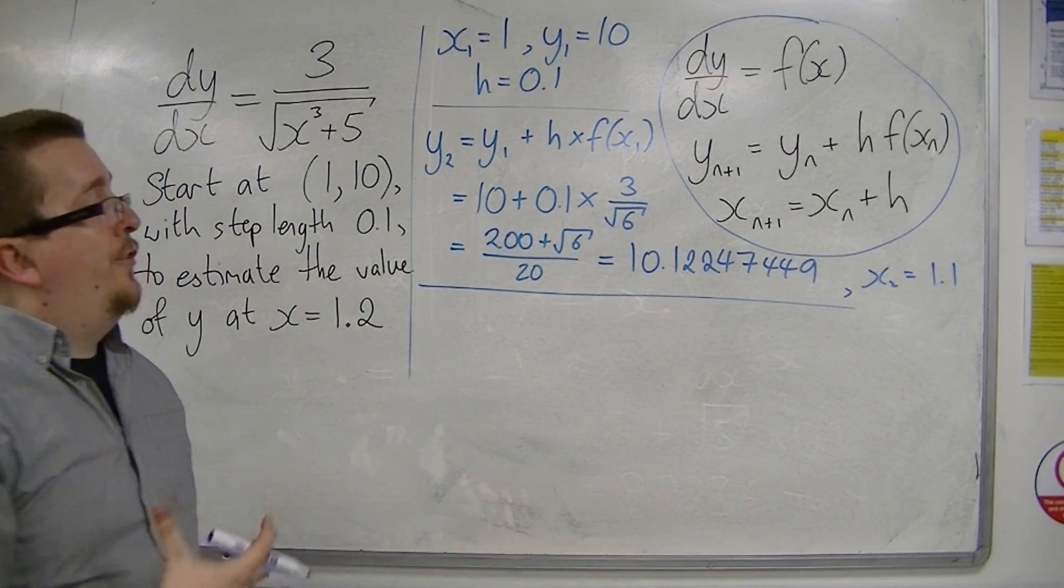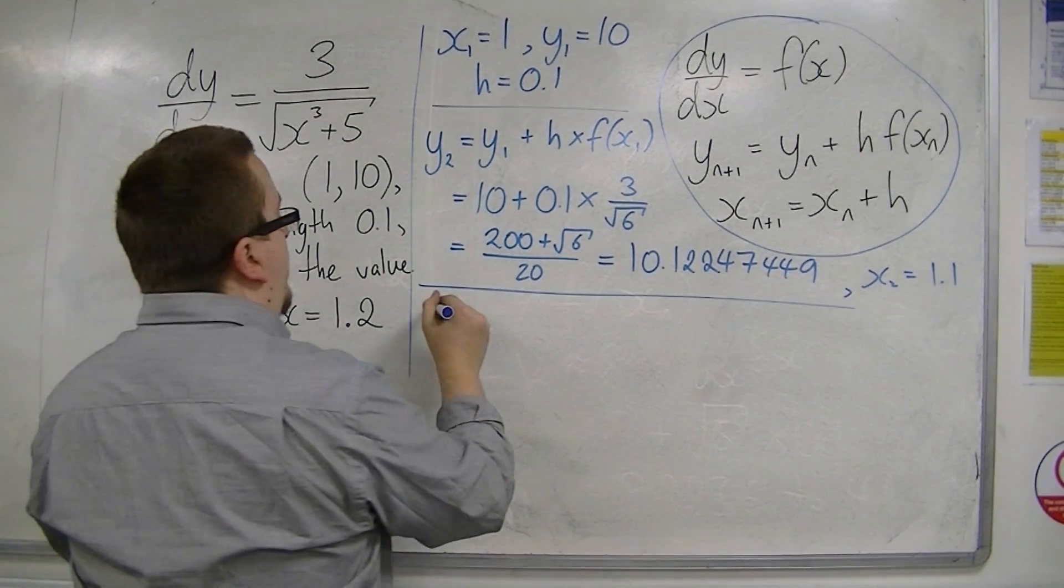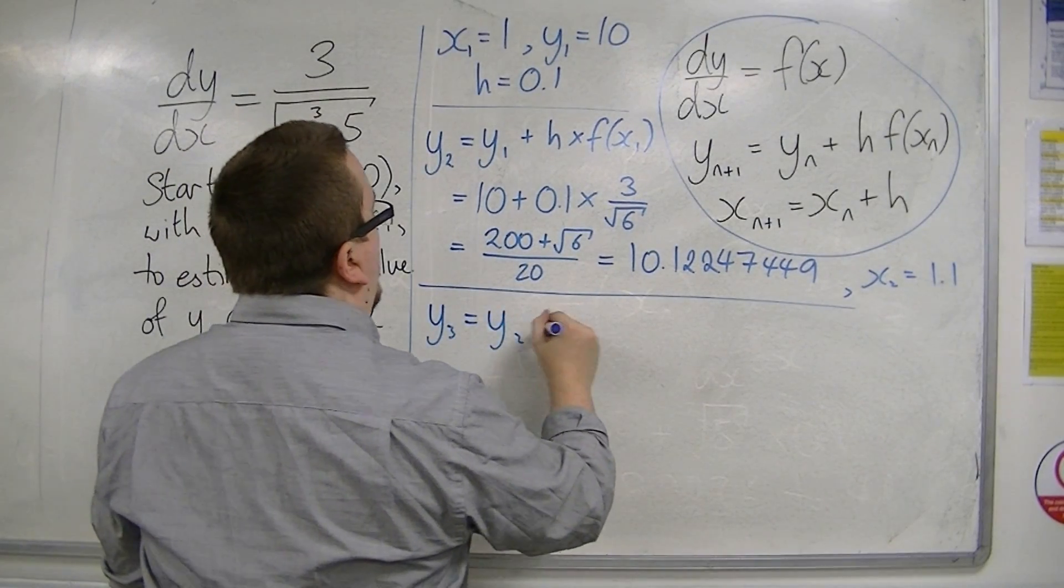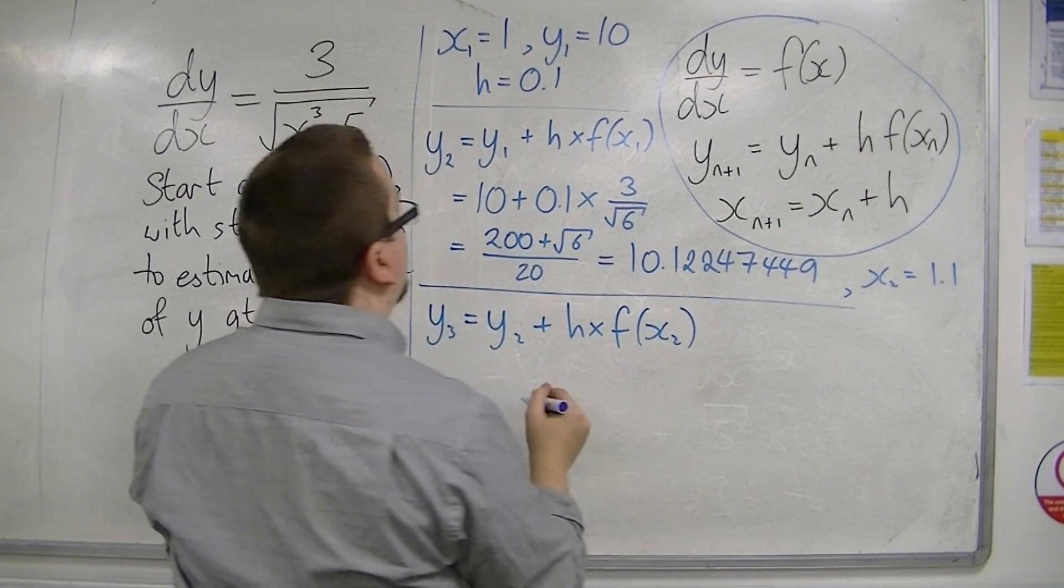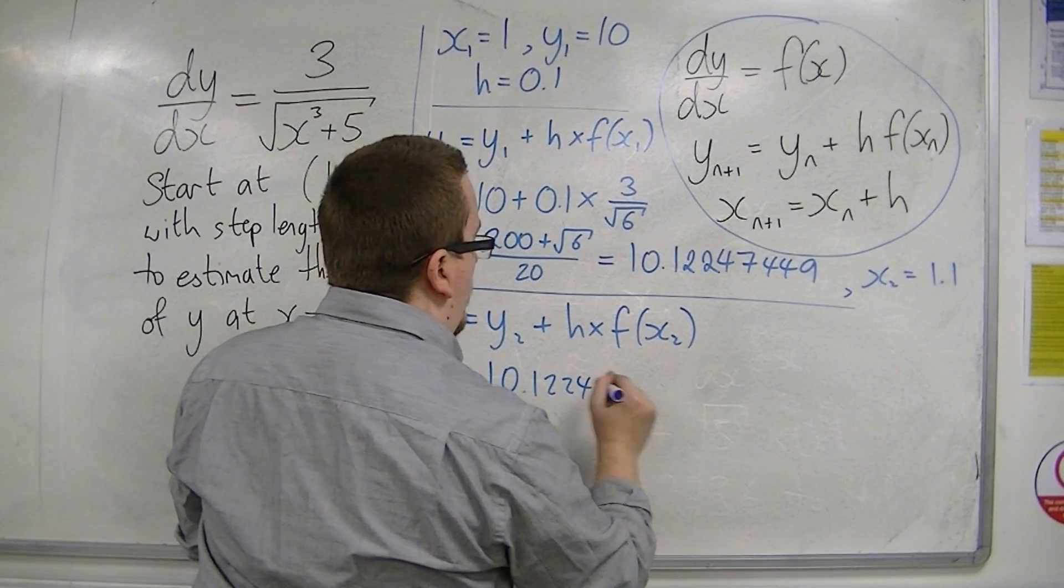So now we want to find the y-coordinate that goes with 1.2. So we're going to have to find y₃. So this is y₂ plus h times f(x₂). So that's the 10.1224, etc.